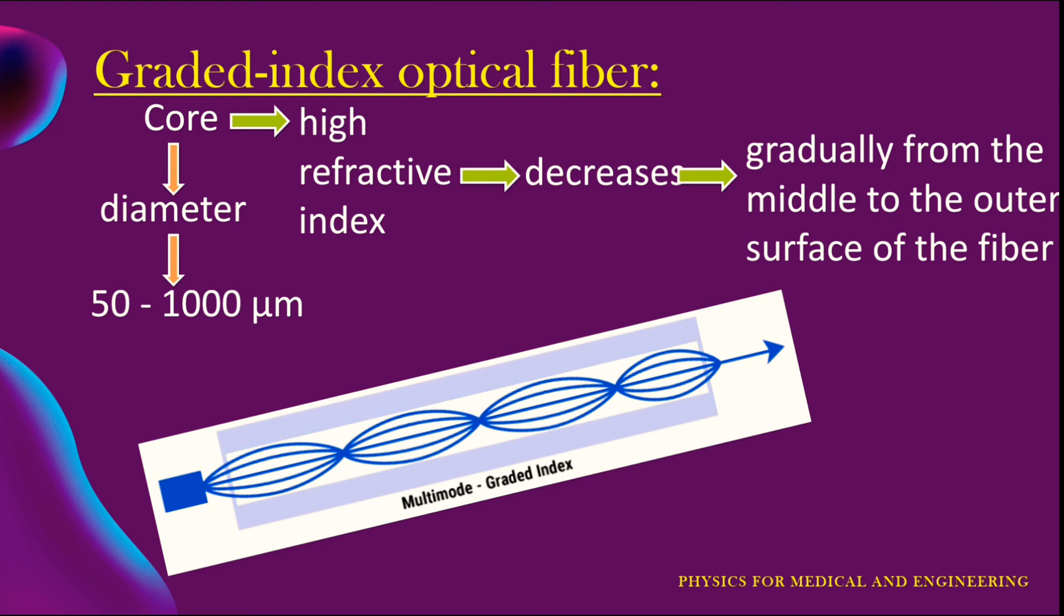This type of fiber is called a multi-mode graded index fiber and is useful for long distance applications in which white light is used. The mode of transmission of light through this type of fiber is also the same, that is continuous refraction from the surface of smoothly decreasing refractive index and the total internal reflection from the boundary of the outer surfaces.